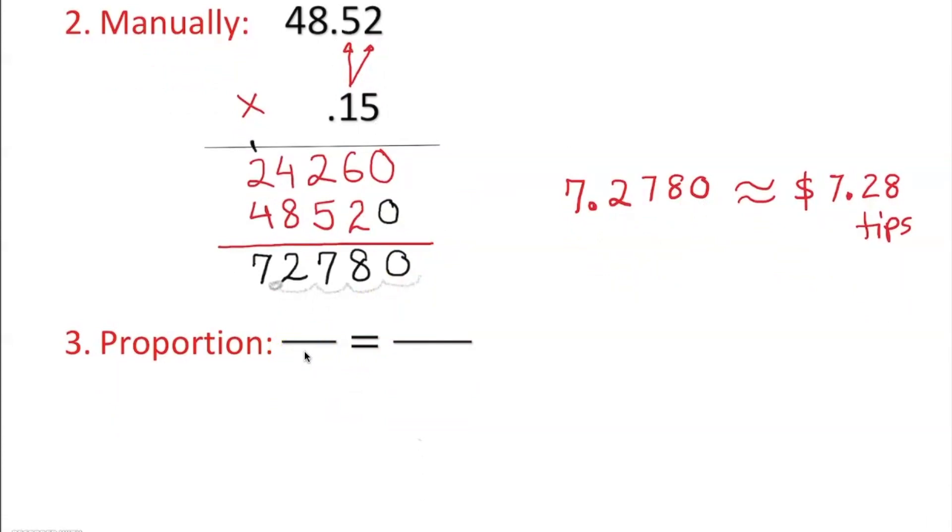So basically, you want to say 15 over 100, and the total money is $48.52, and you're looking for the proportion, which is x. And then, of course, you cross-multiply.